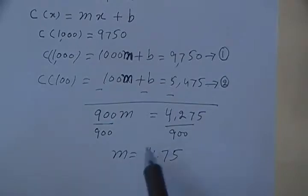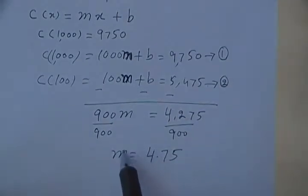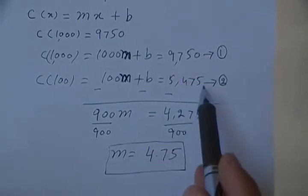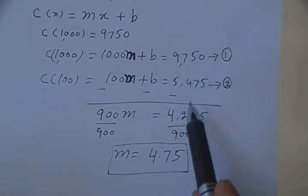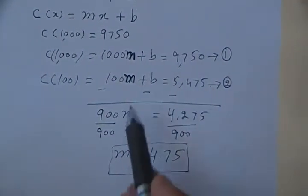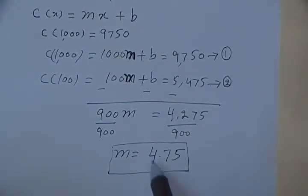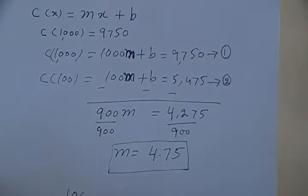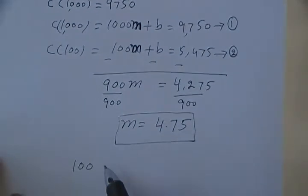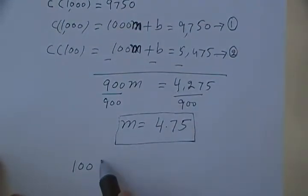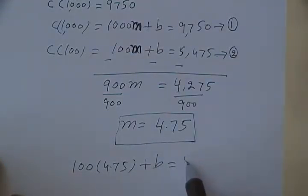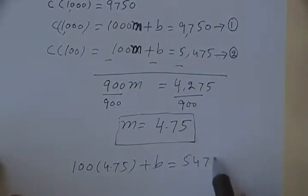Now we also have to find b. We can use either equation one or two. Let me use equation two. Replacing m with 4.75, this gives me 100 times 4.75 plus b.